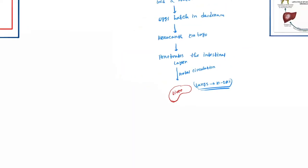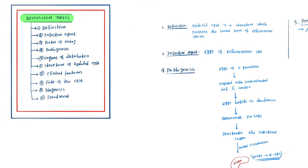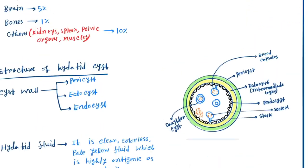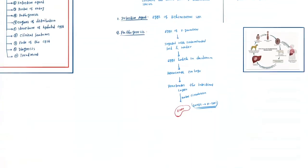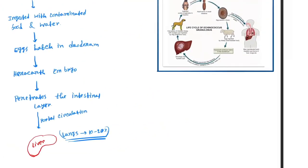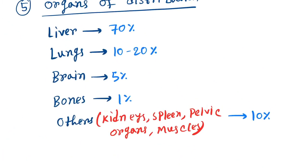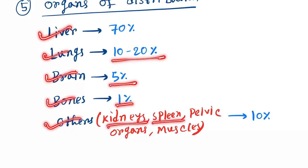Next topic is the organ of distribution. As we told earlier, the first organ is the liver, then next is lungs. Here you can see that in liver 70 percent, lungs 10 to 20 percent, brain 5 percent, bones 1 percent, other organs like kidney, spleen, pelvic organs, muscles 10 percent.